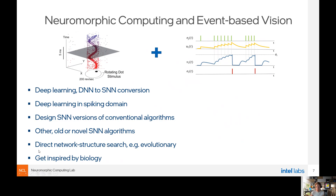We could also perform direct network structure search using evolutionary optimization — some examples of successful architectures found this way were even presented in this workshop. Or we can get inspired by biology and neuroscience. Today we have a lot of knowledge of different circuits in the brains of different animals — insects or mammals — that solve different tasks. There are hypotheses of very precise structures of neuronal circuits responsible for particular tasks, and we could implement something similar on chip.